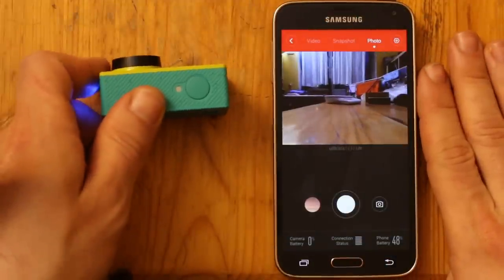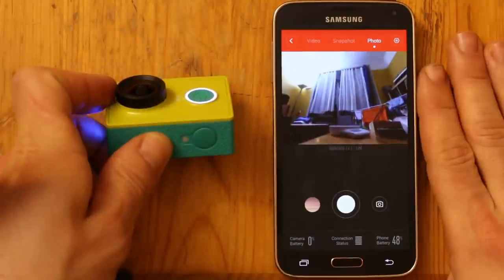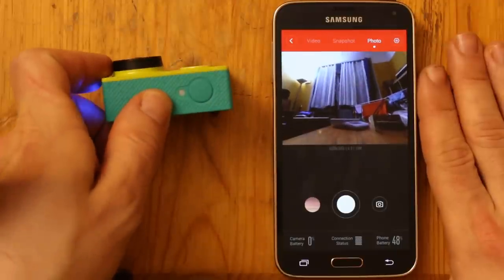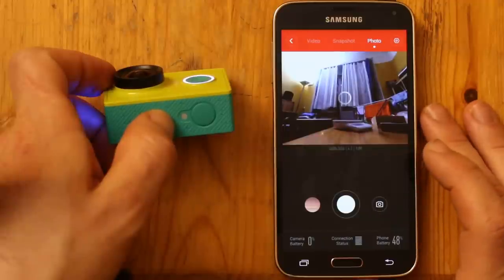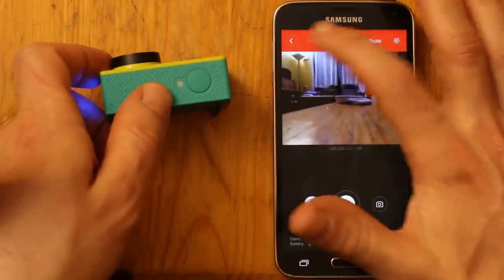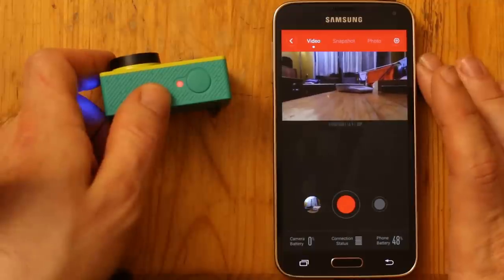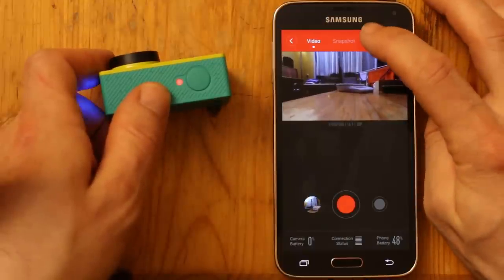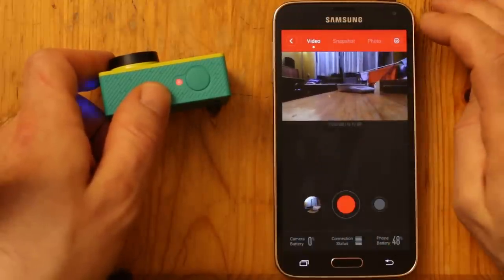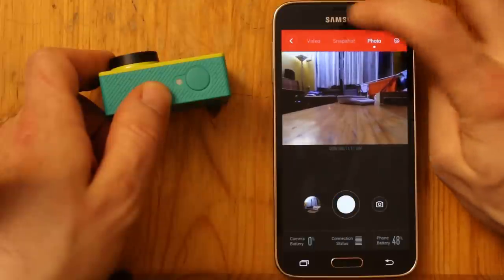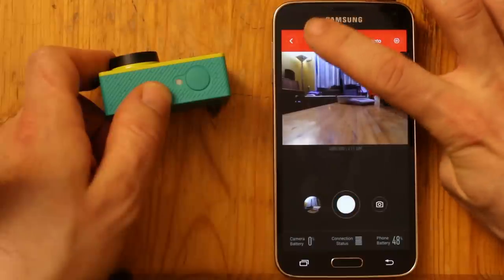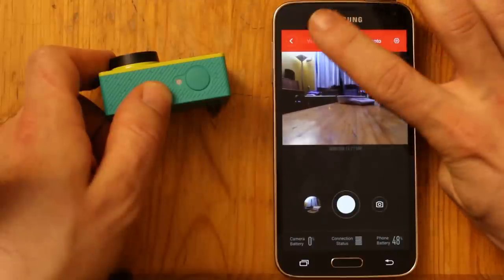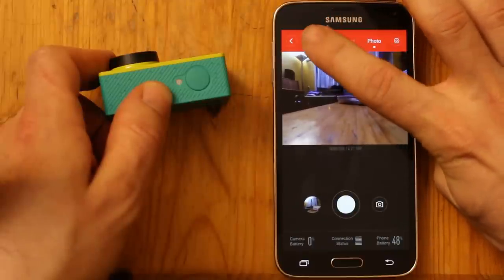Now, in the app, if you want to take a photo, you can just do that. And if you want to take a video, you can see if you switch between photo and video, it goes between 4 to 3 and 16 to 9. So, it's cropping for the video.